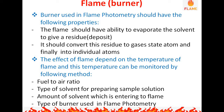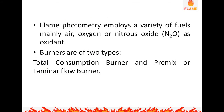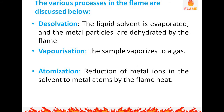Flame photometry employs a variety of fuels, mainly air, oxygen, or nitrous oxide as oxidant. As already discussed, the burners are of two types: the total consumption burner and the premix or laminar flow burner. Now, the different processes which occur in the flame include desolvation as the first important process.